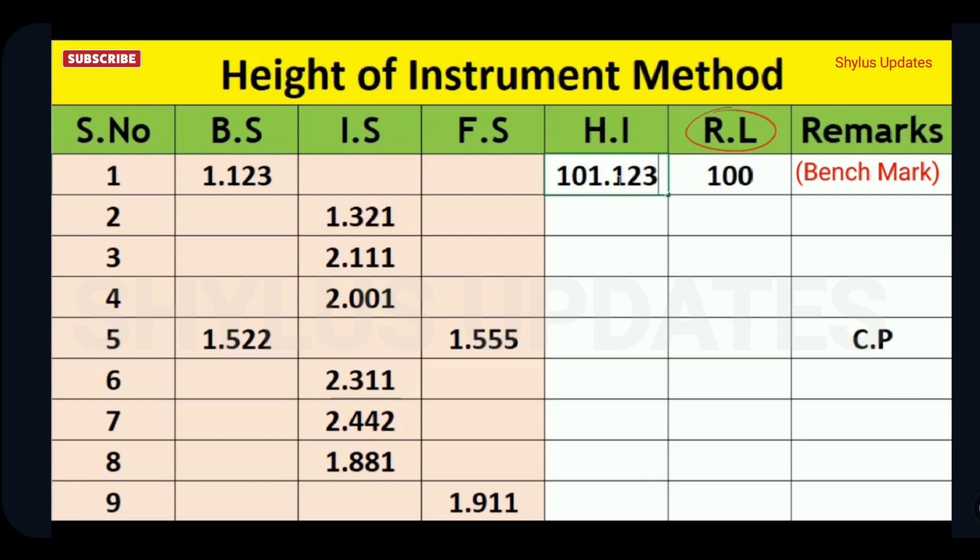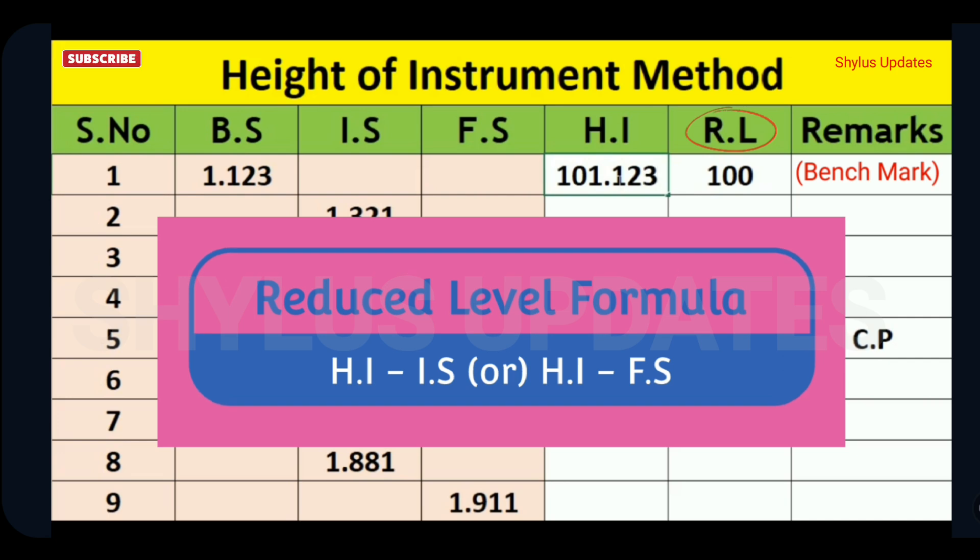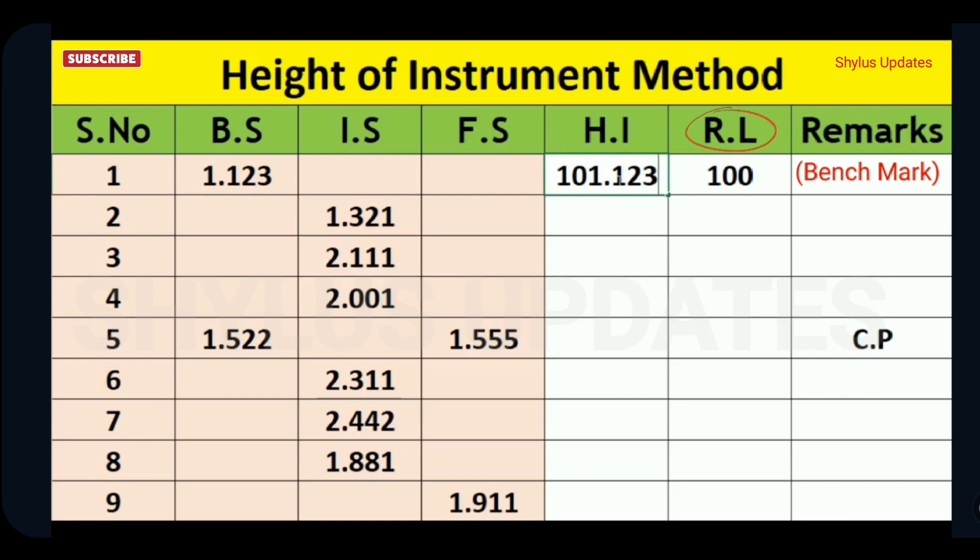Next, we have to find reduced level. For that, use this simple formula: Reduced level is equal to height of instrument minus intermediate site, or height of instrument minus fore site. That is, subtract intermediate site from height of instrument.